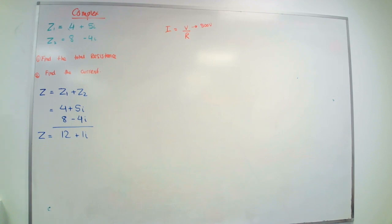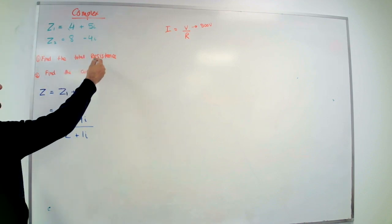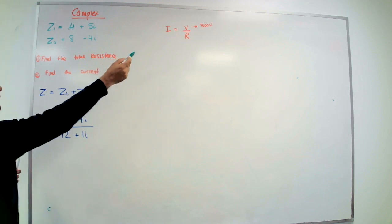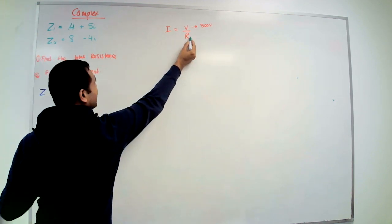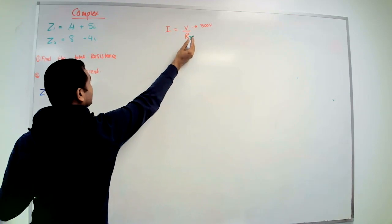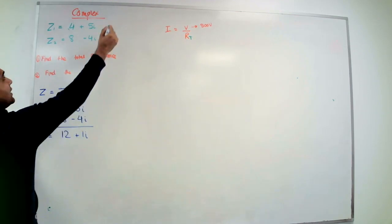I just find the total resistance, simple, easy. Find the value of the current. How do I find the value of the current? To find that value I have the formula because the resistance is given, the voltage is given.